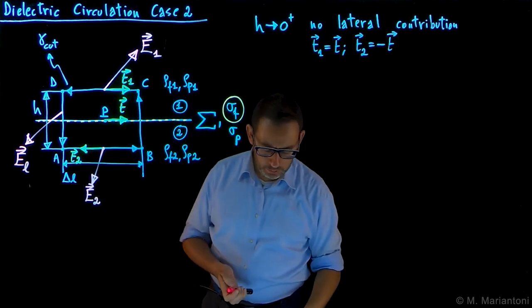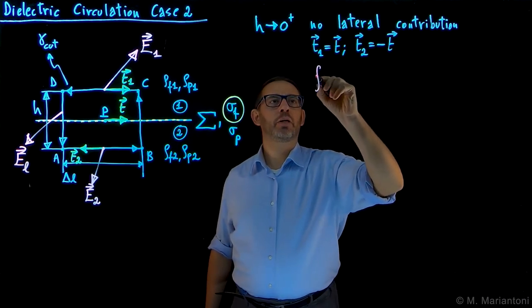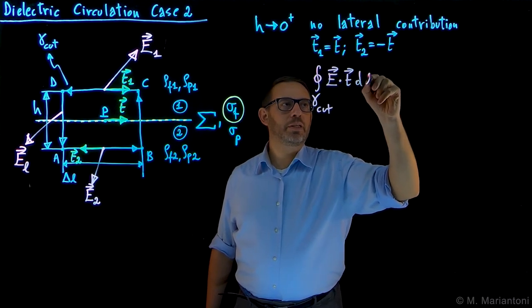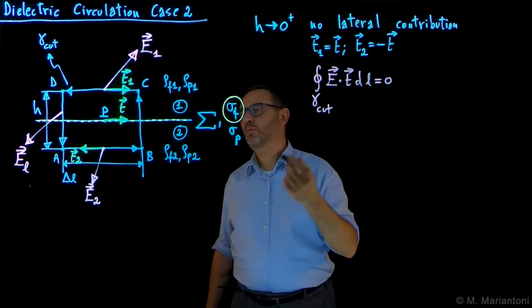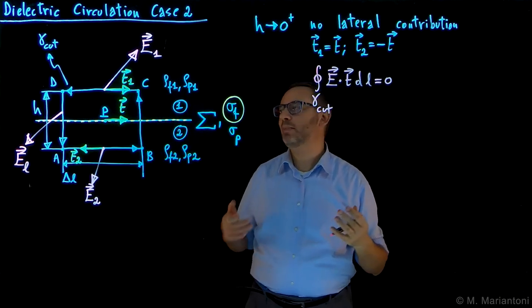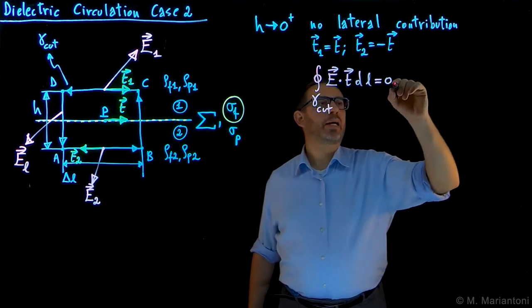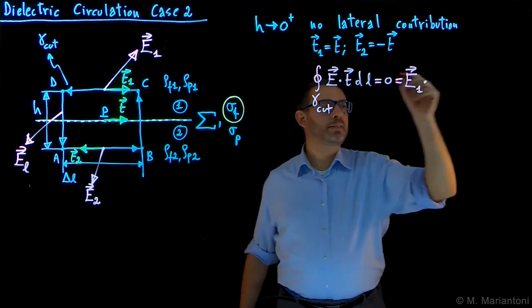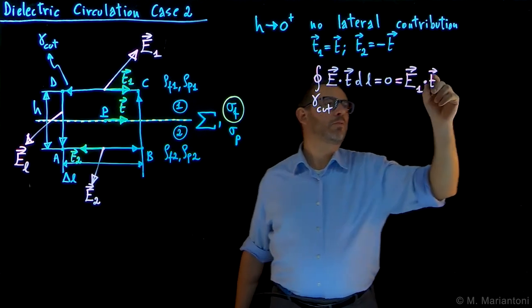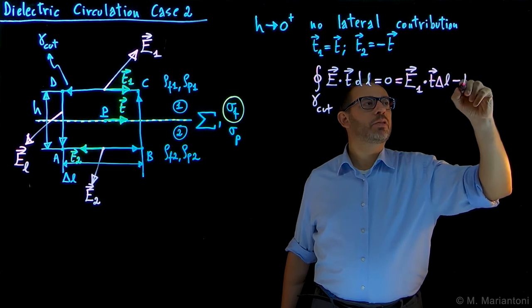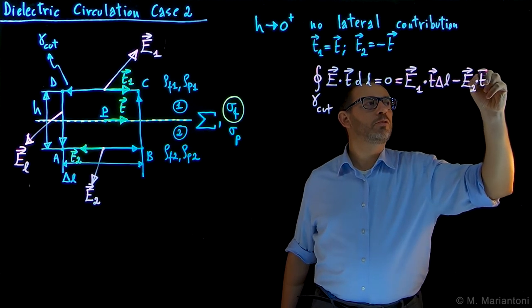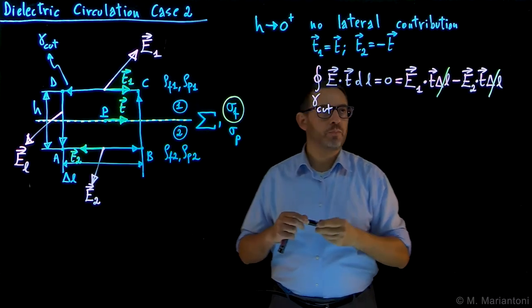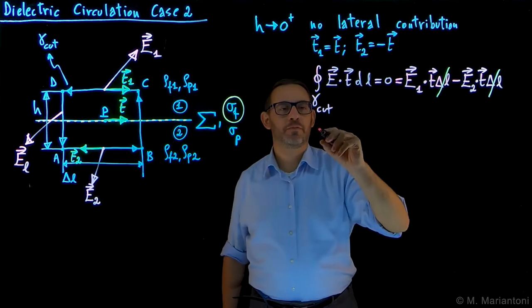The circulation of E, we know that the circulation along gamma cut of E dot TdL, electrostatic case, has to be equal to zero. This simply means that since we have a very small delta L, which is a physics infinitesimal, it's a small quantity, then this becomes E1 dotted with T1, but in this limit it's T, plus E2 dot T times delta L. But this becomes minus E2 dot T because T2 is actually minus T, times delta L. This has to be equal to zero. Obviously, delta L can be eliminated from this equation. And so we find, as expected, the irrotational property of the electrostatic field in local form case 2.